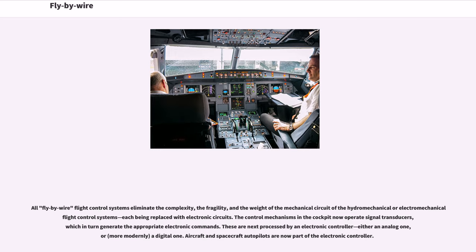All fly-by-wire flight control systems eliminate the complexity, fragility, and weight of the mechanical circuit of hydromechanical or electromechanical flight control systems, each being replaced with electronic circuits. The control mechanisms in the cockpit now operate signal transducers, which generate the appropriate electronic commands processed by an electronic controller — either an analog one or, more modernly, a digital one. Aircraft and spacecraft autopilots are now part of the electronic controller.